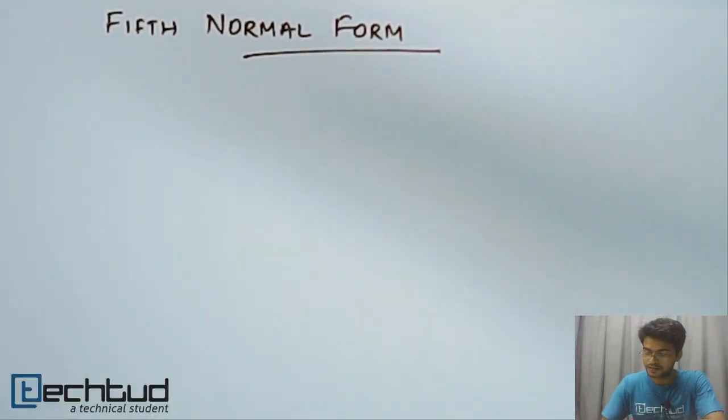5th normal form is a little more restrictive normal form over 4th normal form. We have already understood 4th normal form which is multivalued dependency, and now we have to study 5th normal form.